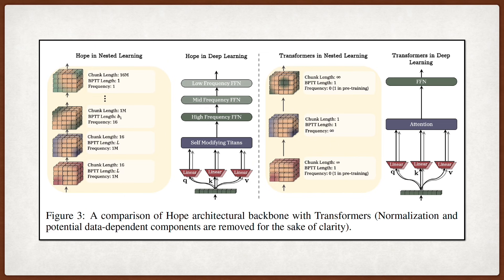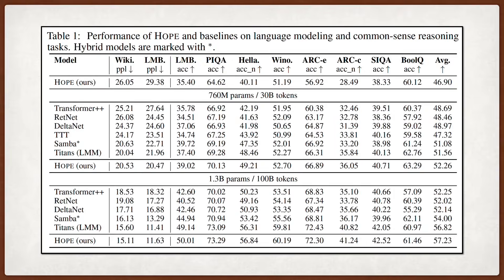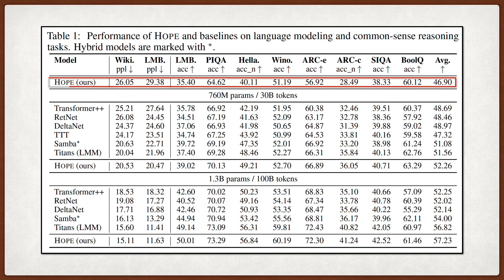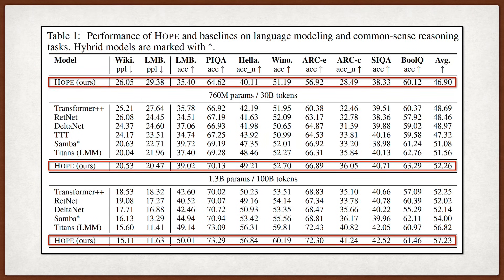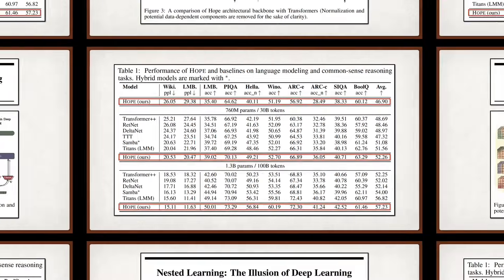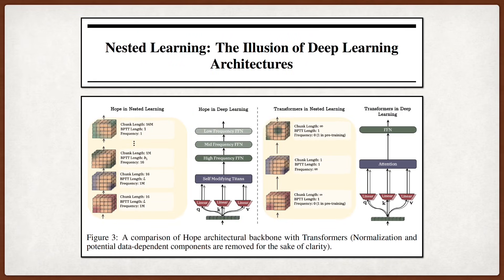By combining CMS with a self-referential sequence model, they create the HOPE architecture. The experimental results show that HOPE demonstrates very good performance across various scales, up to 1.3 billion parameters, and tasks, often outperforming both traditional transformers and recent modern recurrent networks like RedNet and Titans on language modeling and common-sense reasoning benchmarks. This entire framework suggests that computational capacity isn't just about stacking layers vertically, but about designing a system with nested optimization structures that possess different timescale memories, treating the optimizer itself as a core learning module.